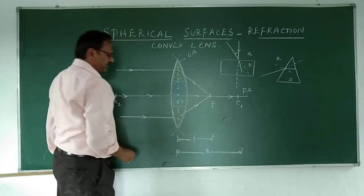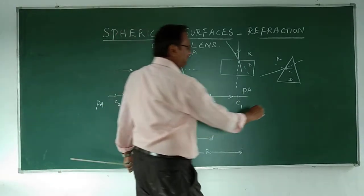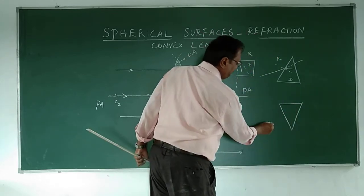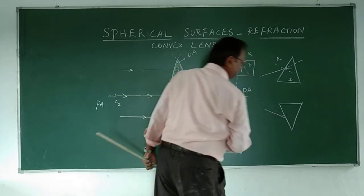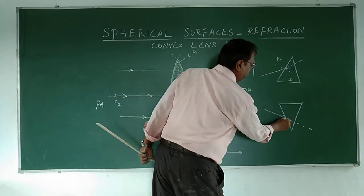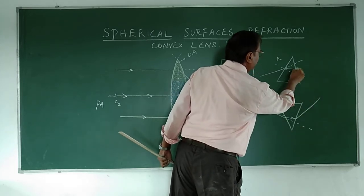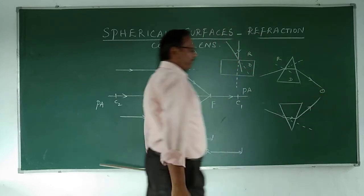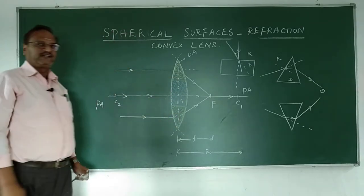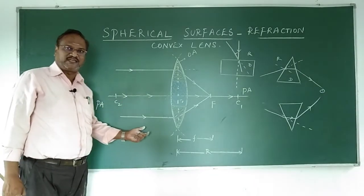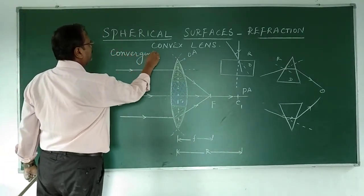For the lower part — below the principal axis — why does the ray go upward? Simply draw an inverted prism there. In the inverted prism, the ray comes parallel, should go straight, but bends towards the normal, and eventually they converge at a point. So the lens can be understood as made of prism sections, which explains how refraction causes convergence. This is a convex lens, also called a converging lens.